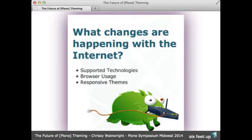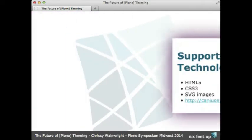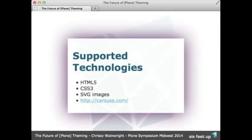Now let's get away from Plone a little bit and talk about what changes are happening with the internet — supported technologies, browser usage, and responsive themes. Currently supported technologies include HTML5, CSS3, and SVG images. If you're curious what you can actually use across all browsers, I recommend caniuse.com — you can type in something like CSS transitions and it'll tell you exactly what browsers support it, whether there's partial support or anything. You're mainly going to run into issues in Internet Explorer 8, especially with some of the things you may have learned from Rob yesterday.